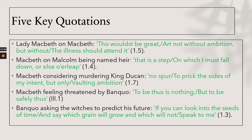Five key quotations for the theme of ambition: Lady Macbeth on Macbeth — 'Thou art not without ambition, but without the illness that should attend it.' Macbeth on Malcolm being named heir — 'That is a step on which I must fall down or else o'erleap.' Macbeth considering murdering King Duncan — 'No spur to prick the sides of my intent, but only vaulting ambition.' Macbeth feeling threatened by Banquo — 'To be thus is nothing, but to be safely thus.' Banquo asking the witches — 'If you can look into the seeds of time, and say which grain will grow and which will not, speak to me.'